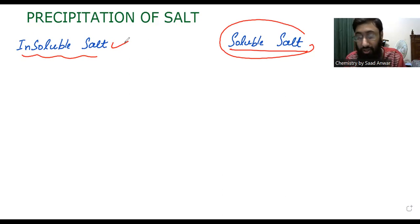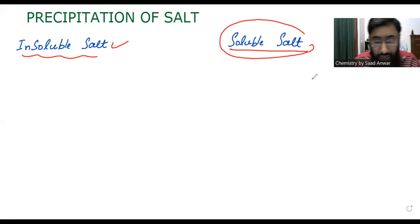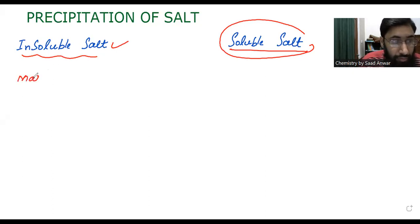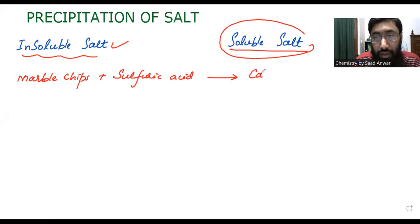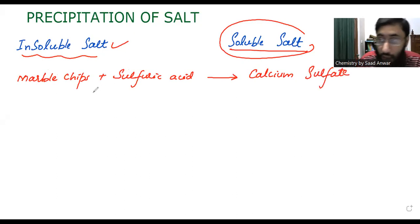What is insoluble salt? Insoluble salt means salts which are not soluble. Let's take an example. I am going to react marble chips with sulfuric acid. The product I will get from this particular reaction is calcium sulfate. Remember, calcium sulfate is an insoluble salt.